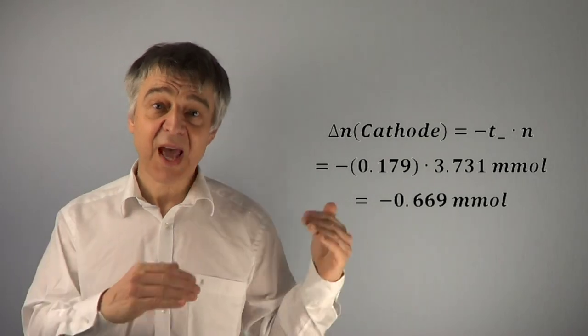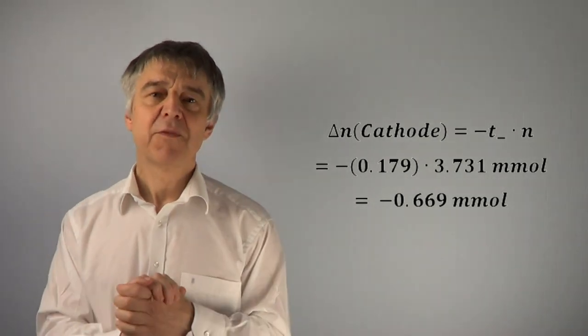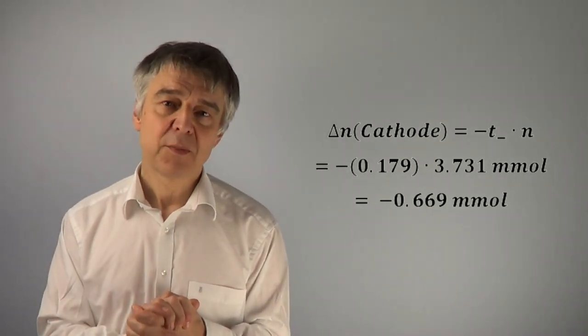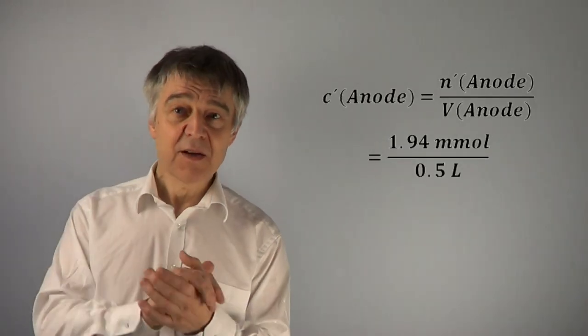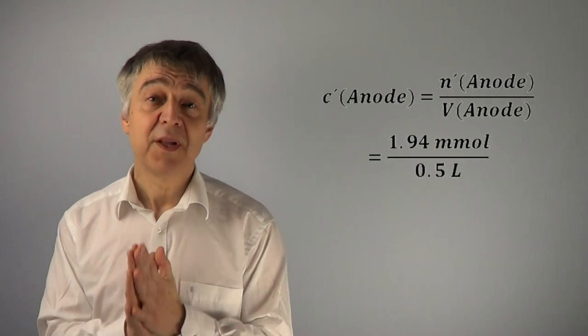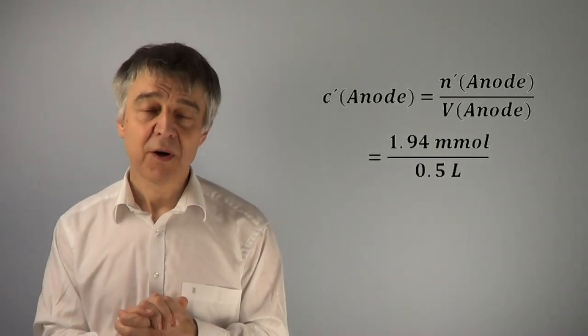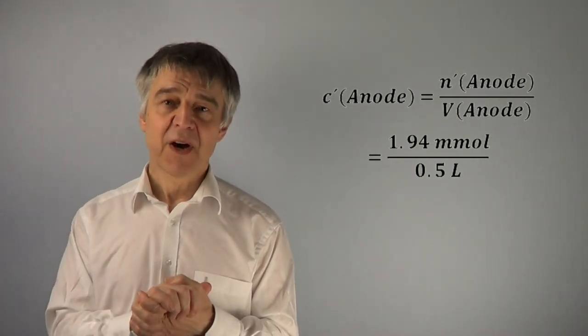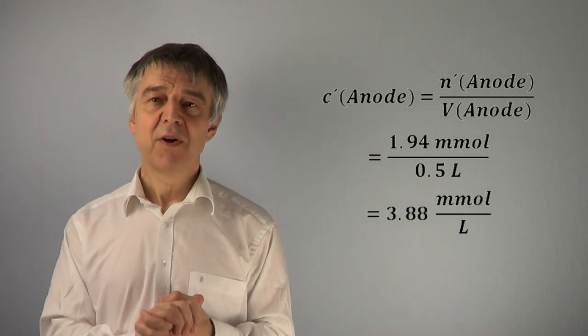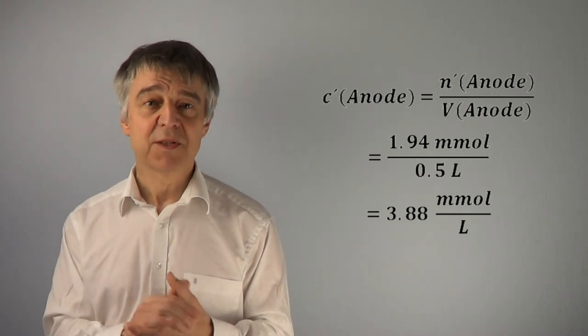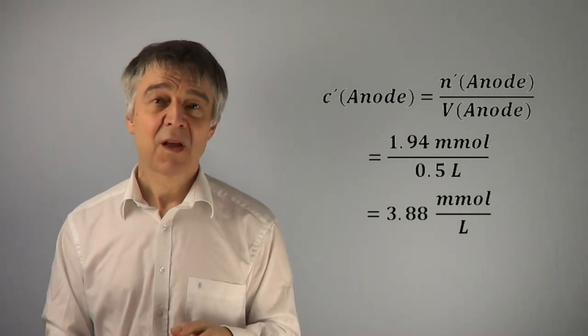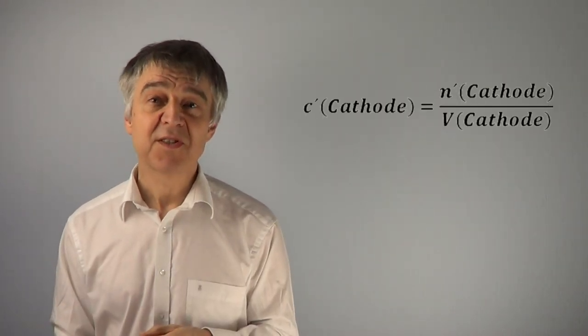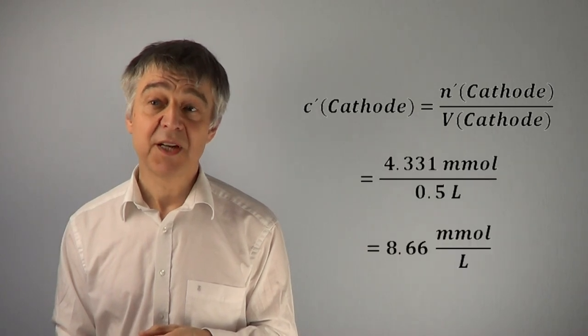Adding the changes in the cathode and anode compartment, we of course end up with 3.731 mmol. The final concentration at the anode will be 1.94 mmol divided by 0.5 liters, which equals 3.88 mmol per liter. The final concentration at the cathode will be 8.66 mmol per liter accordingly.